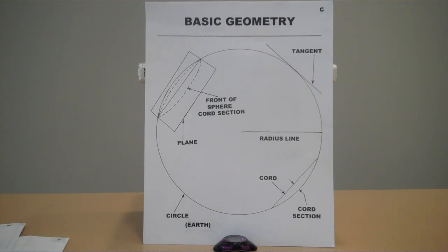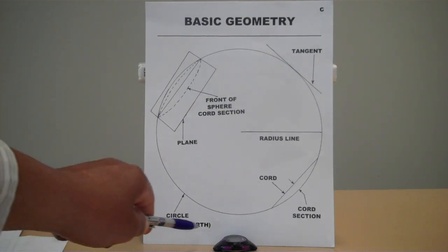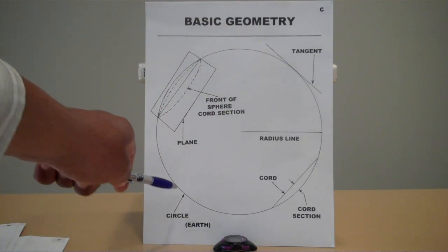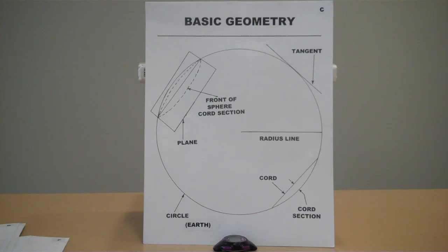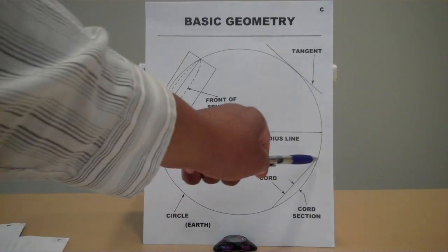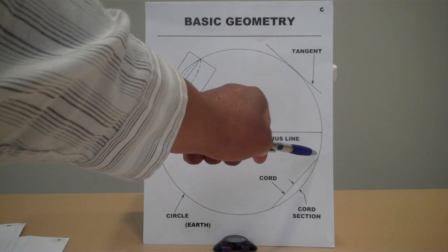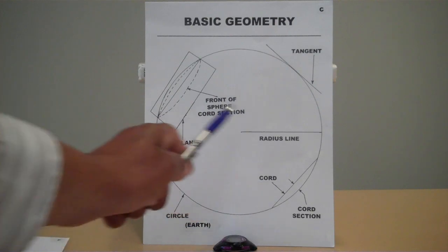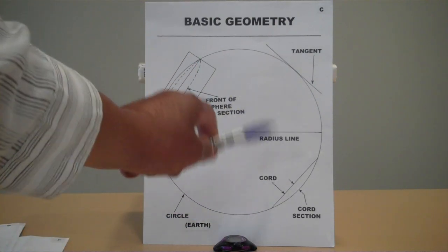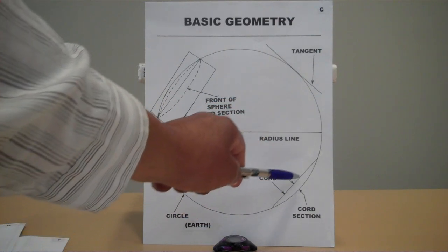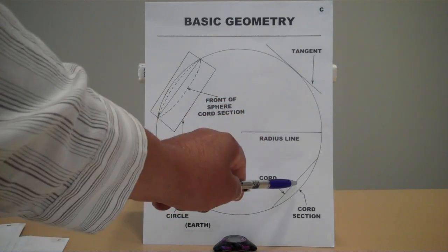This here is basic geometry. The first thing is a circle — this represents the Earth, this gigantic circle. This here is called a chord. A chord is a straight line which connects two points of a circle from within the circle, inside the circle. This here is a chord section — this bulge and the chord itself, the straight line and the bulge, is a chord section.